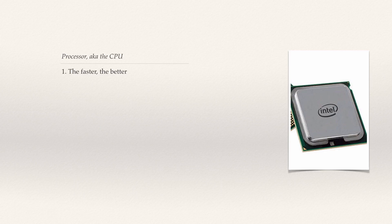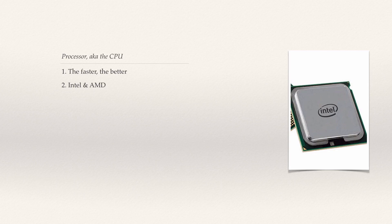There are two main manufacturers on the market nowadays: Intel and AMD. As of 2015, Intel has an edge when it comes to performance, power consumption, and heat output. Their processors are also a pricier option. As a rule of thumb, you would be looking to buy an Intel CPU if you need absolute best performance, or an AMD CPU if you're on a budget. But as always, there are some considerations to be made.